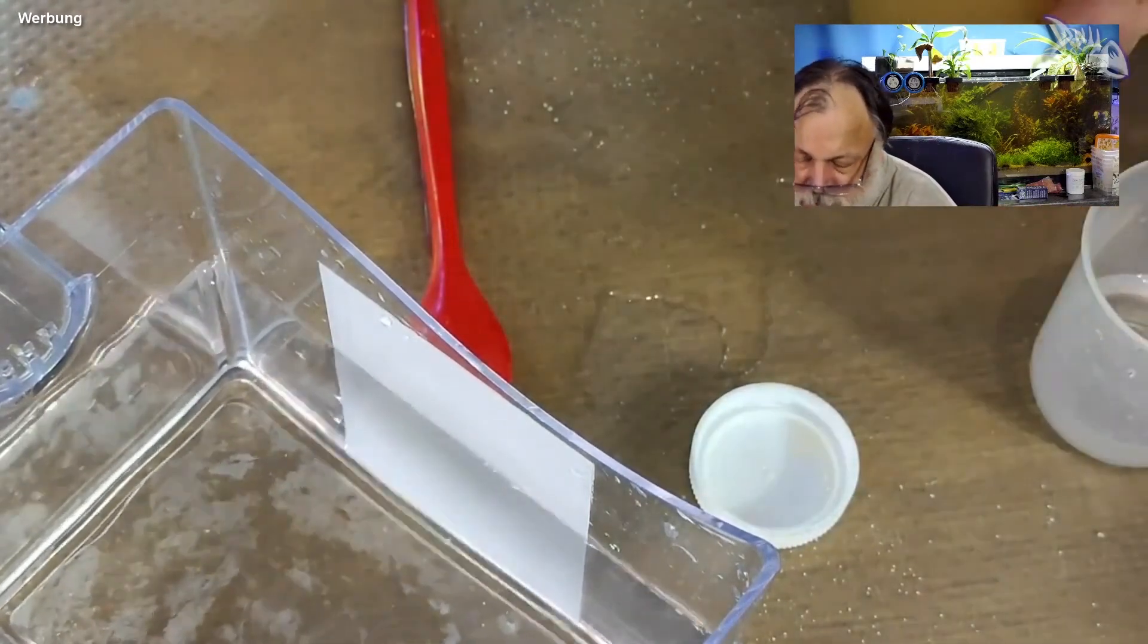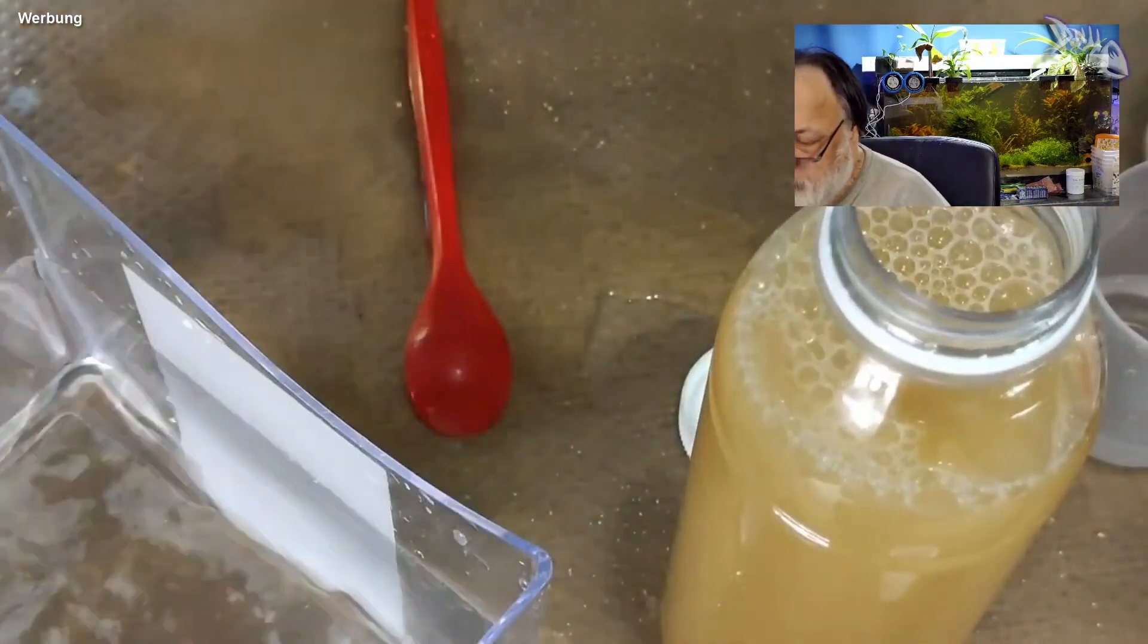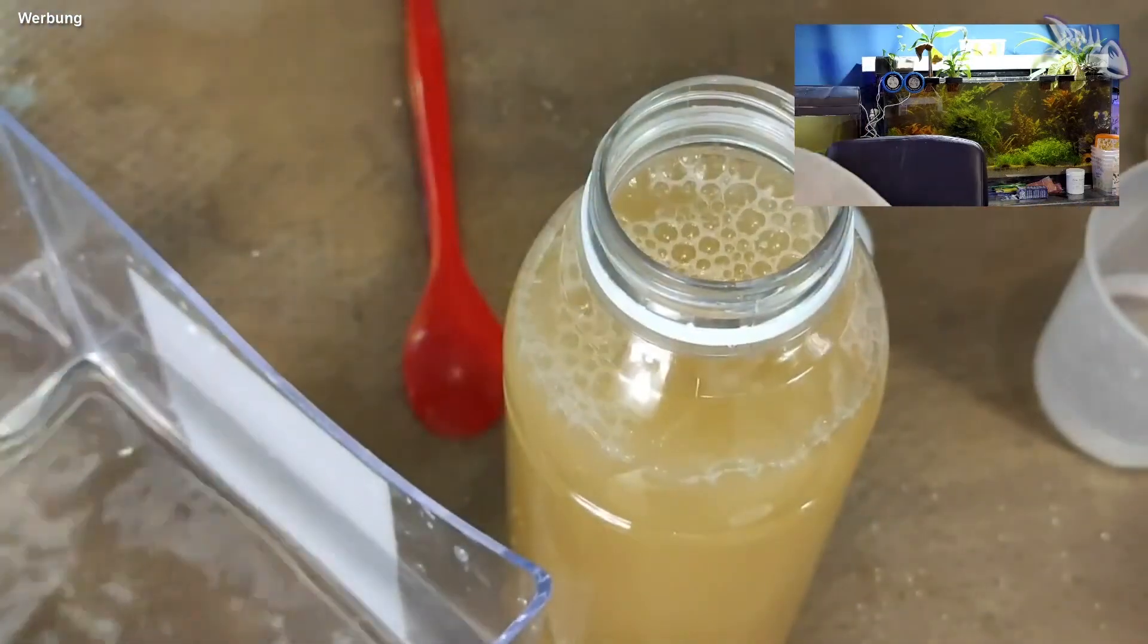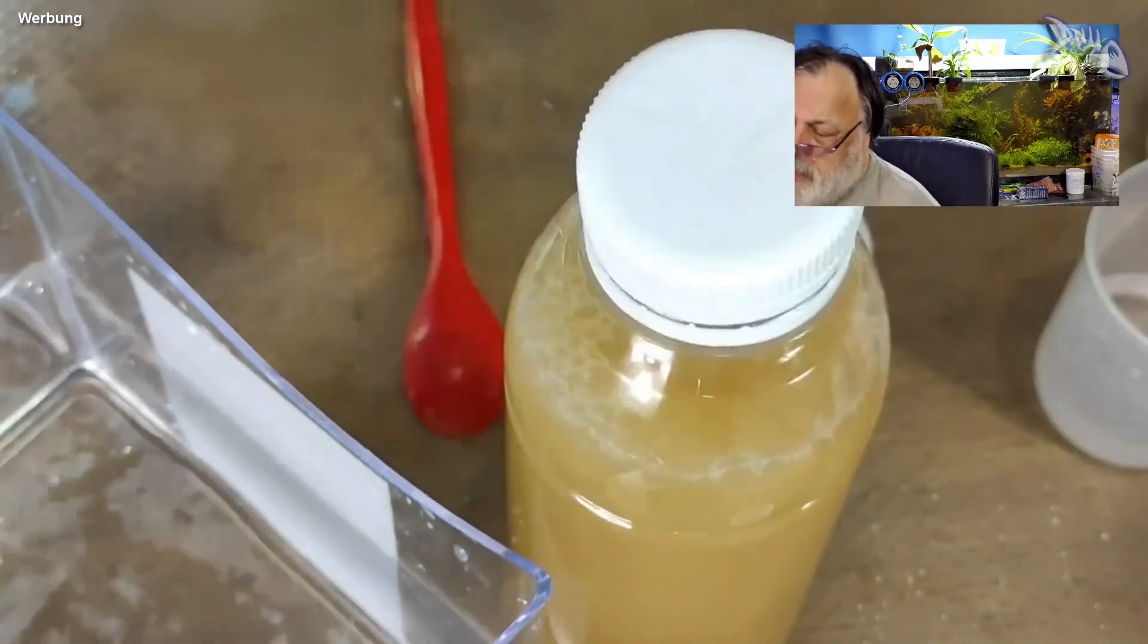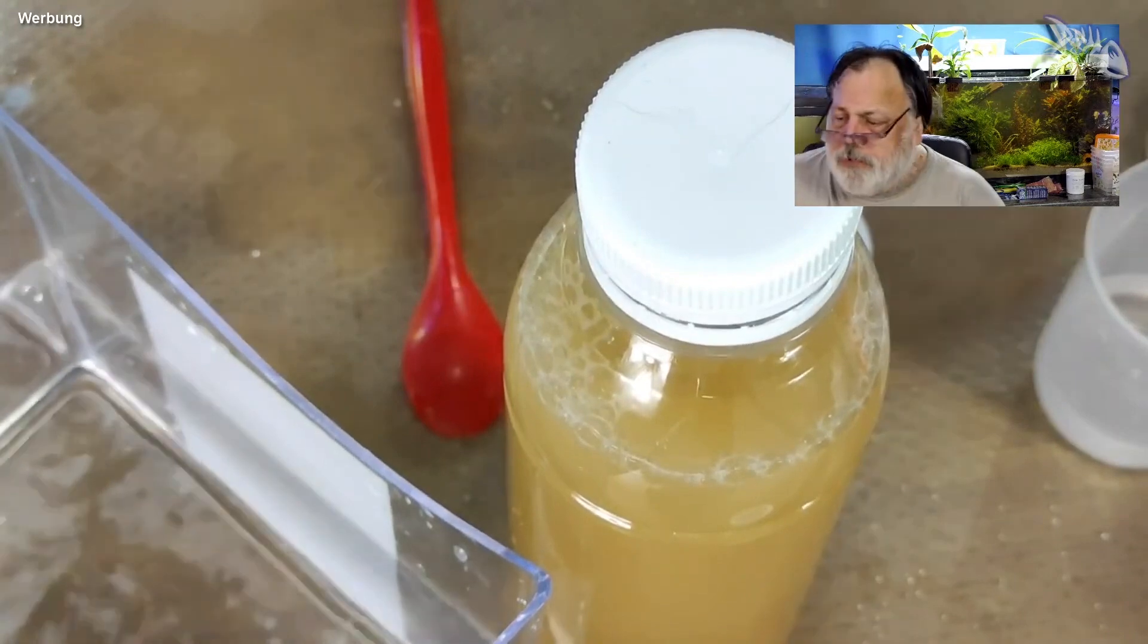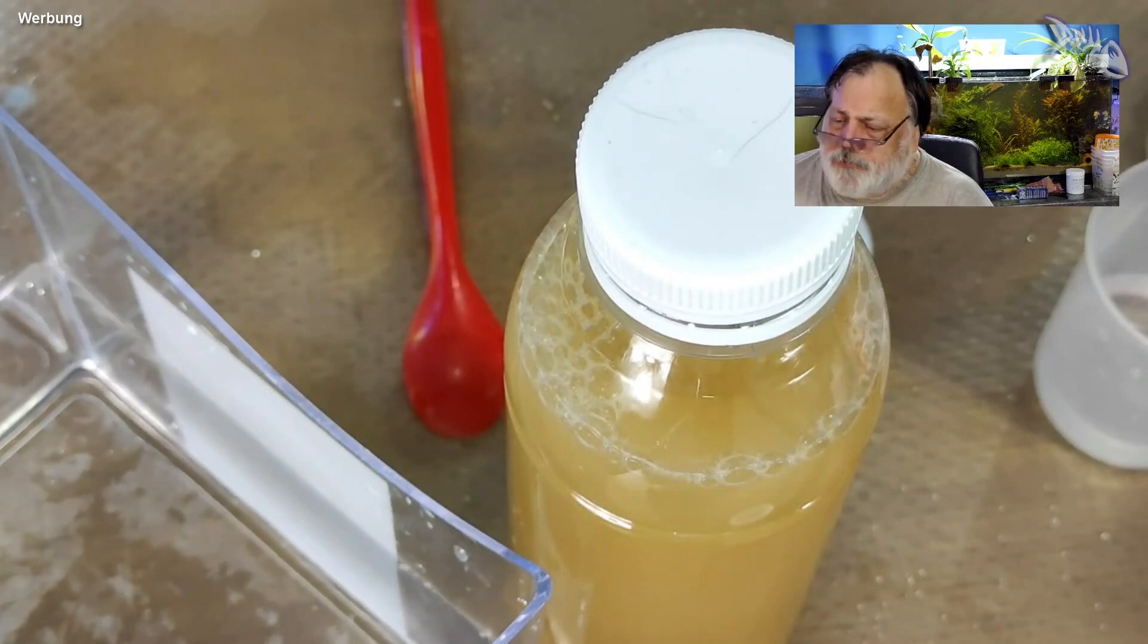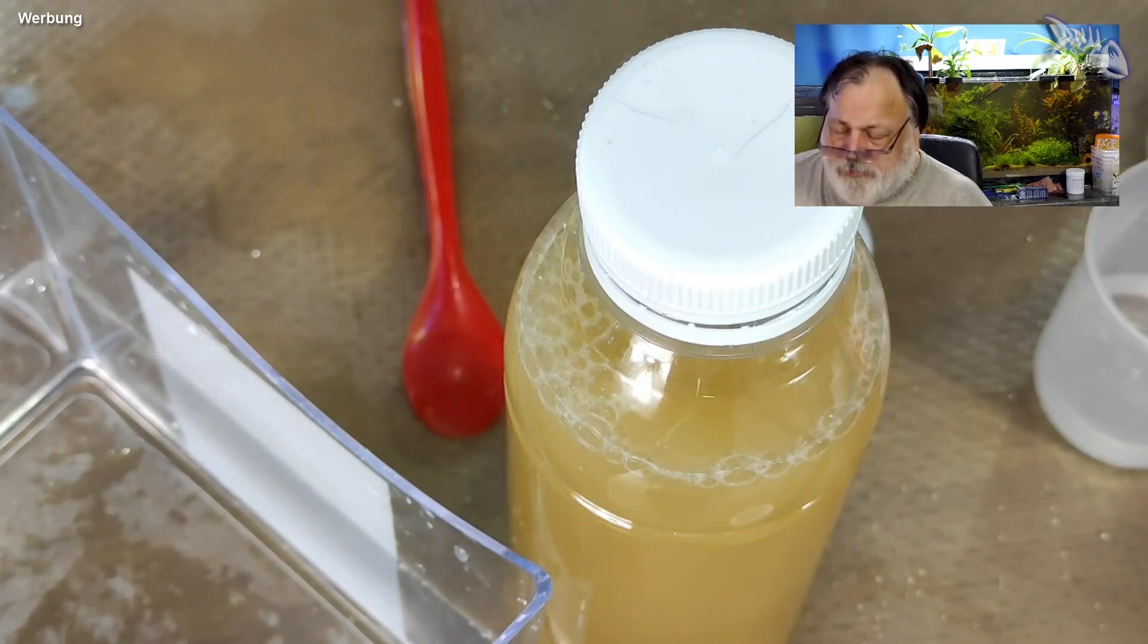Jetzt nehmen wir den Ansatz und füllen da einen guten Schluck von rein. Könnt ihr jetzt natürlich nicht sehen, muss ich mal wieder hier vorstellen. Und jetzt legen wir den Deckel einfach nur locker drauf, damit Luft rein kann, dass die Tiere atmen. Die brauchen auch ein bisschen Sauerstoff, aber auf der anderen Seite keine Schadtiere oder Schadorganismen in die Flasche kommen.